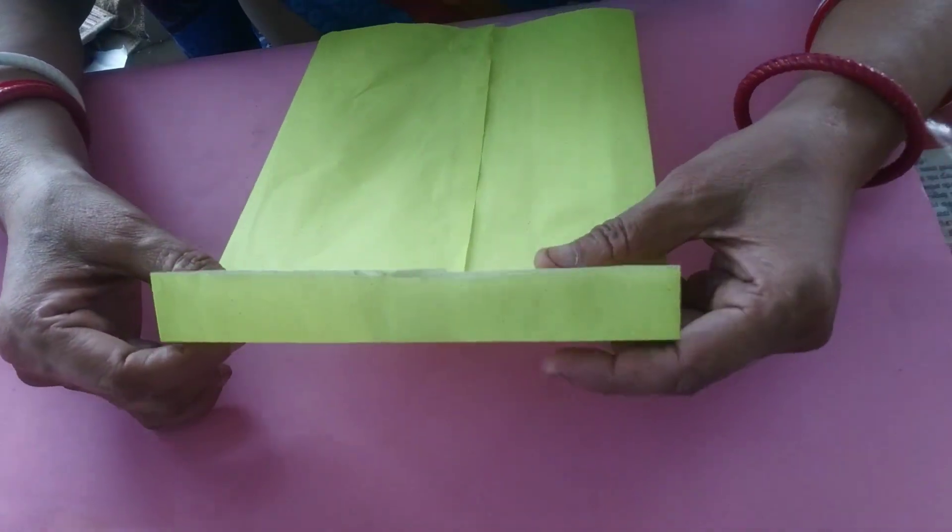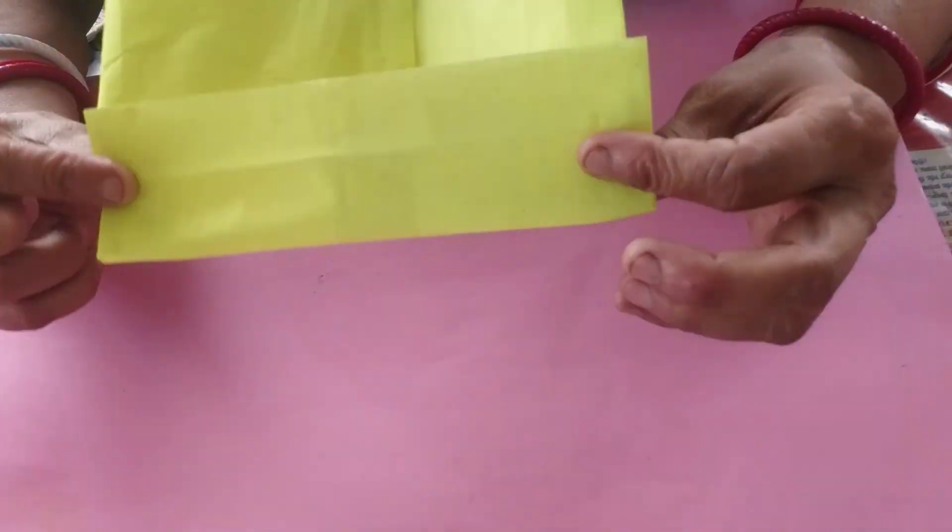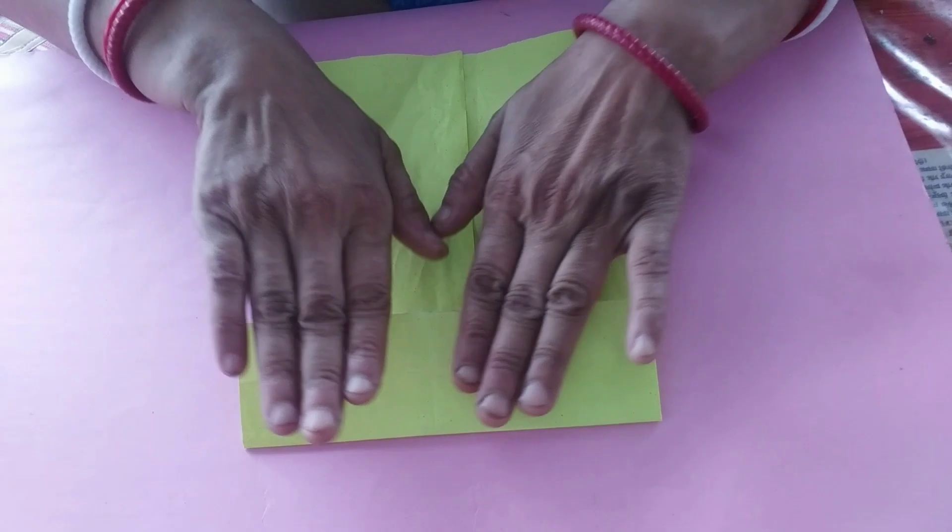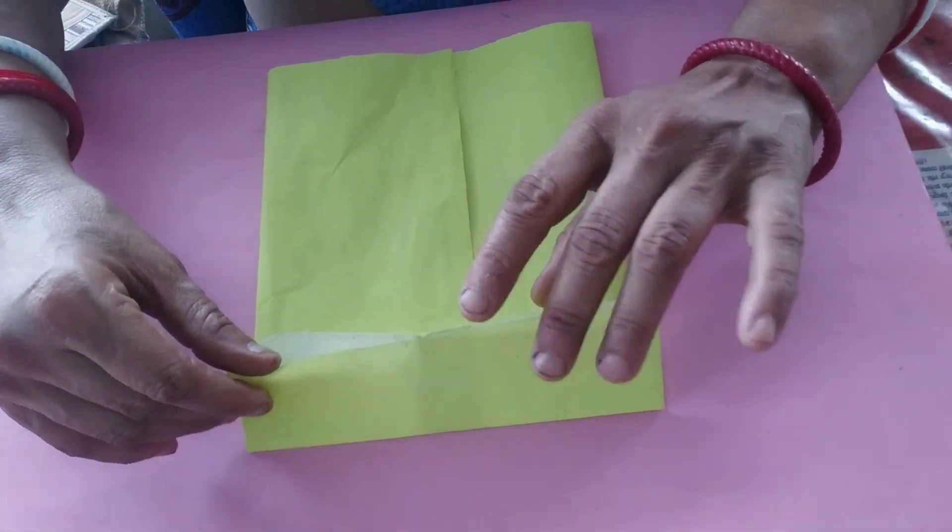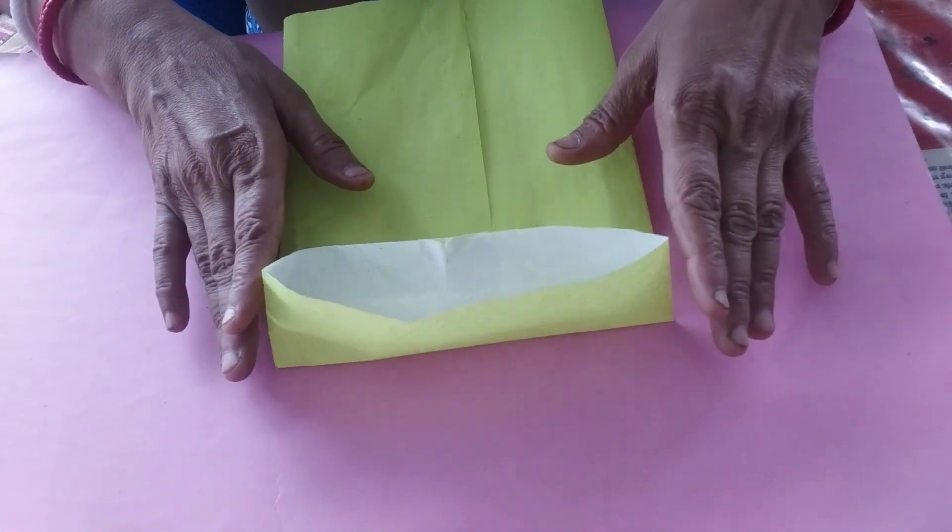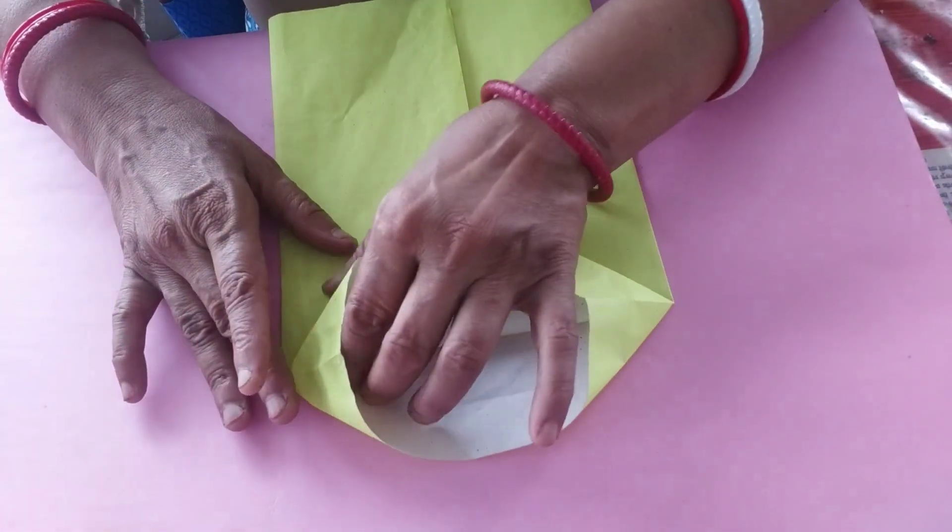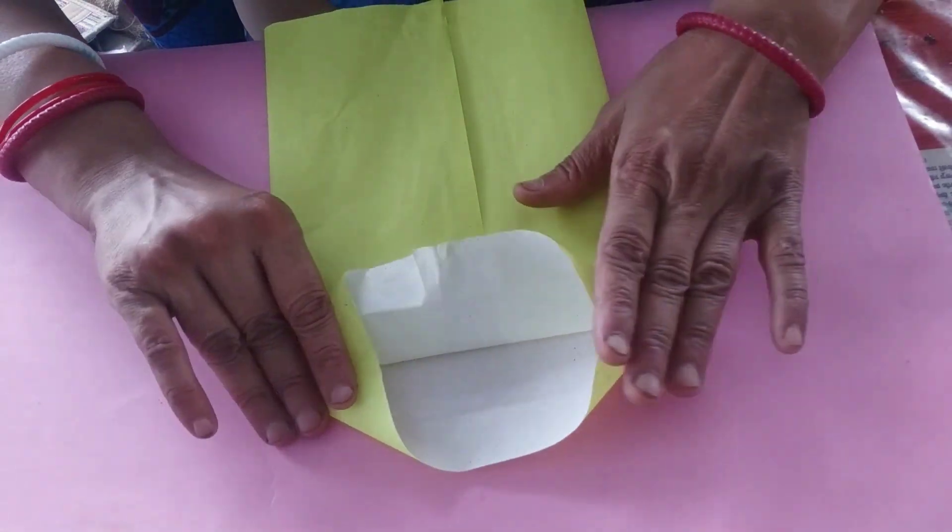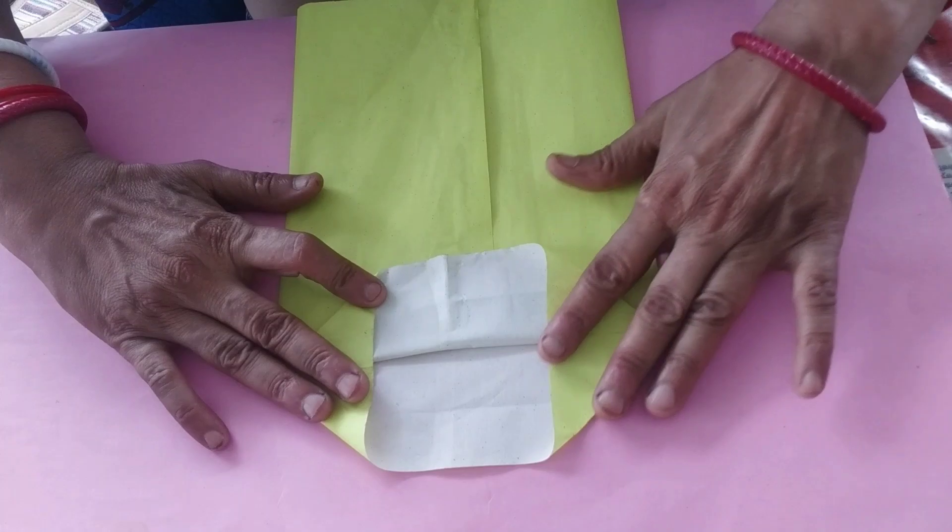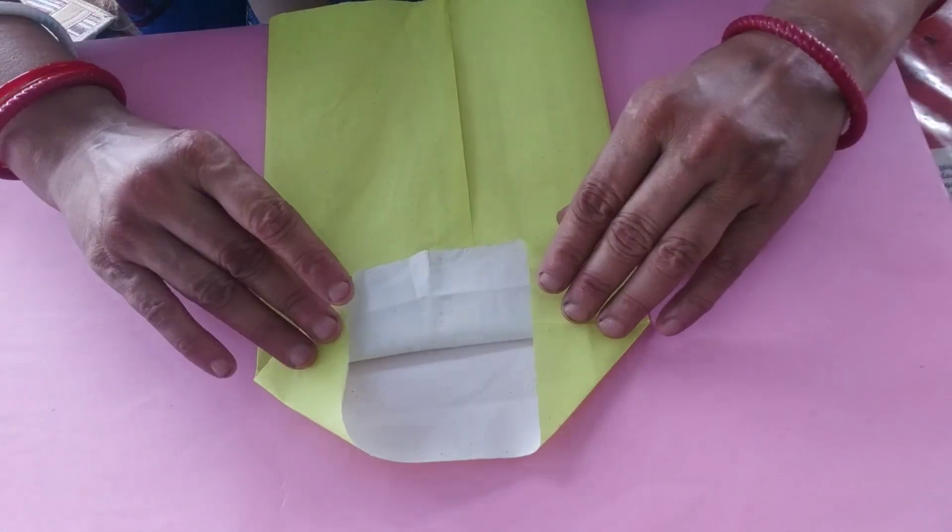So we require some more than 1 inch fold like this. Fold it and press. Again, open this area and fold this type. You see, it looks like alphabet A. Both sides look like alphabet A.